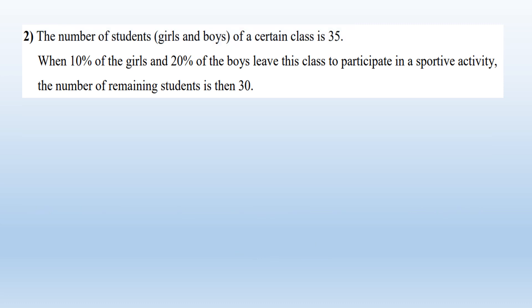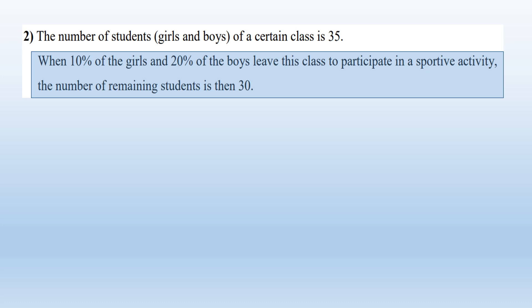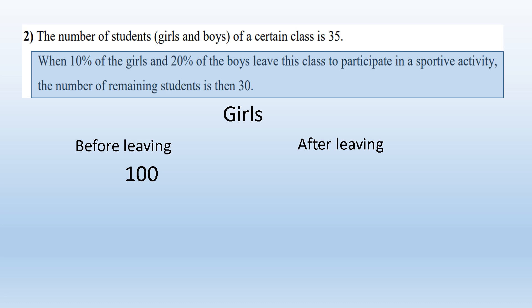Now let's find the second equation. 10 percent of the girls left the class and 20 percent of the boys left the class, and the new number of students is 30. For girls: suppose the number of girls before leaving was 100 — then after leaving, the number of girls is 90, because 10 of the 100 left. In reality the number of girls is X, so after leaving the class it becomes 0.9X.